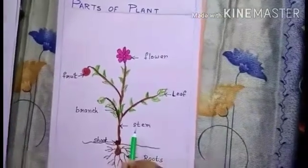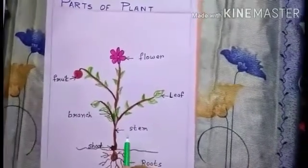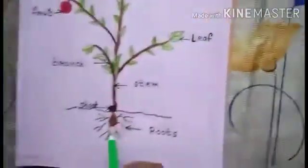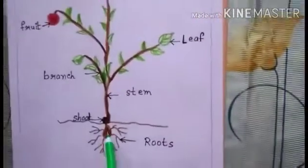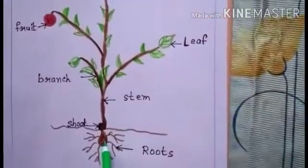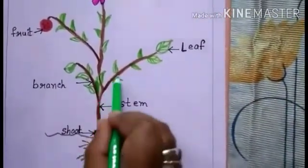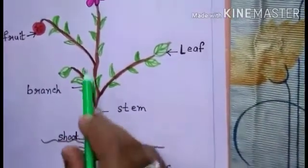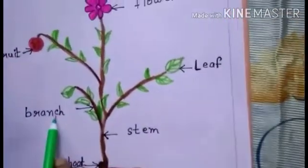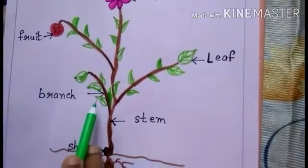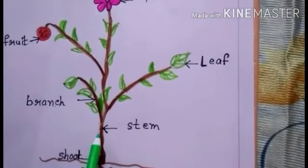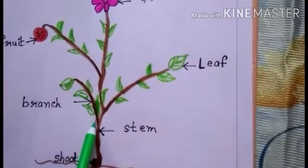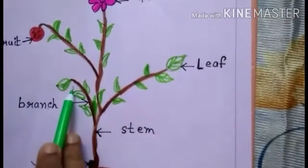The stem helps the plant to stand upright. It carries water and minerals to all parts of the plant. Branches and leaves are parts that grow from the stem.